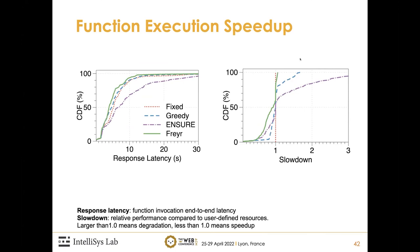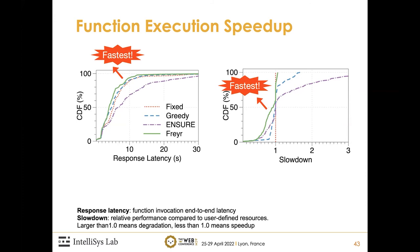The first metric is function execution speedup. We define response latency as the function invocation end-to-end latency. The left figure shows that Freyr achieves the fastest execution of the same workload based on the CDF of response latency. The right figure shows slowdown, defined as relative performance compared to user-defined resources — slowdown greater than 1.0 means performance degradation, less than 1.0 means speedup. Freyr is the fastest compared to baselines and maintains negligible performance impact on the workload while harvesting resources.